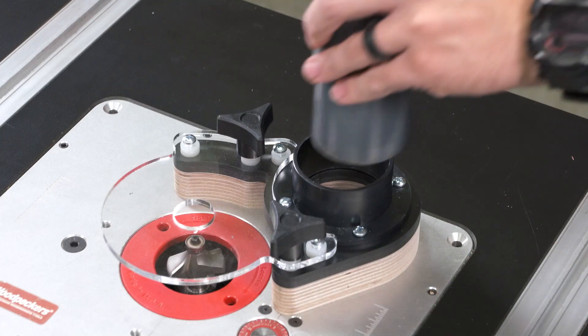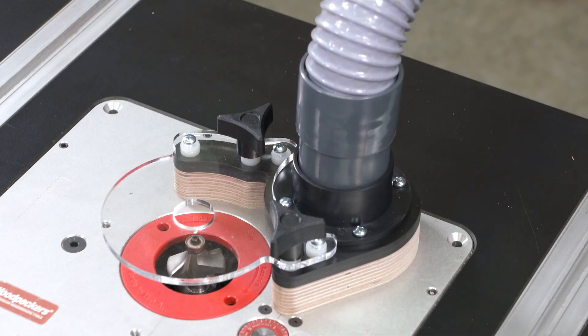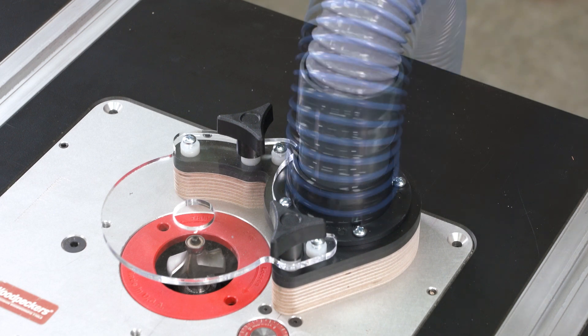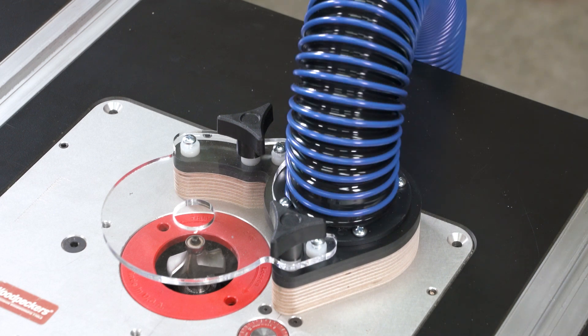For dust collection, the built-in combination dust port accepts either a two and a quarter inch shop vac hose or a two and a half inch dust collection hose.